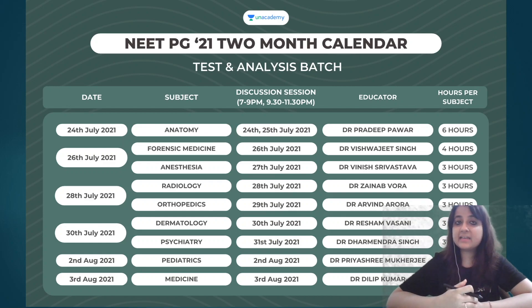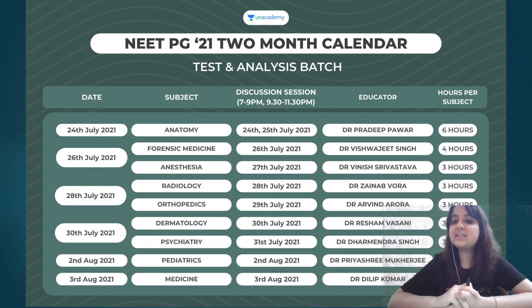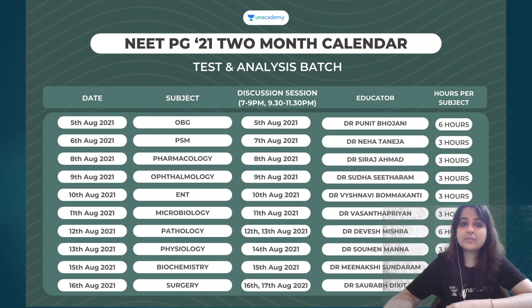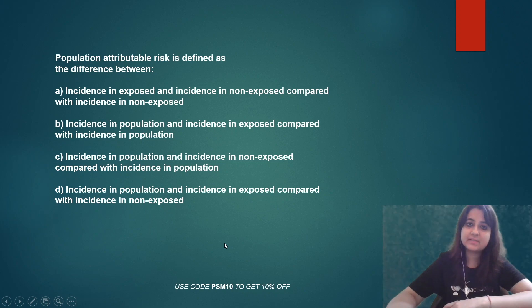Before we begin, we at Unacademy have started a test and analysis batch for our NEET PG students, starting from 24th of July. You can still learn from your wonderful educators — subscribe and use my code PSM10 to get a 10% off. These are the teachers who are going to teach you from 24th July till 16th August. You can also use PSM10 or PSM Live and get a 10% off.